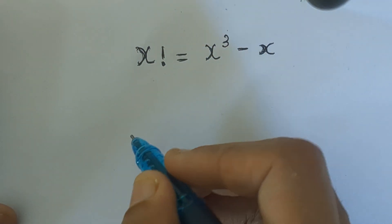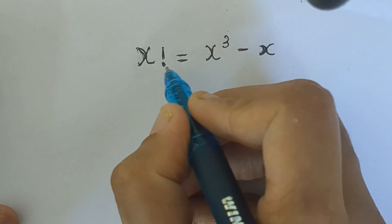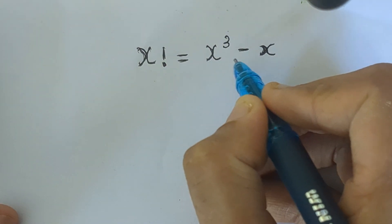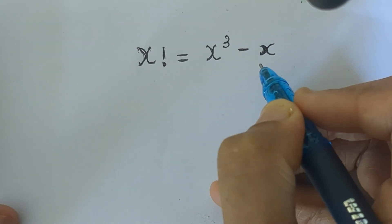Hello everyone. Our question is: x factorial equals x cubed minus x.